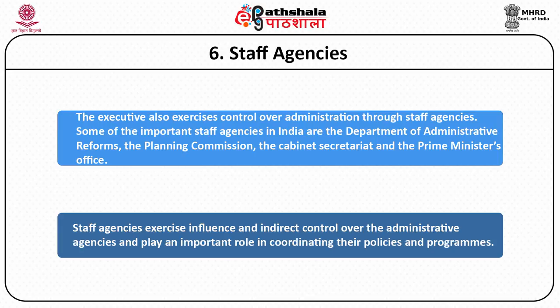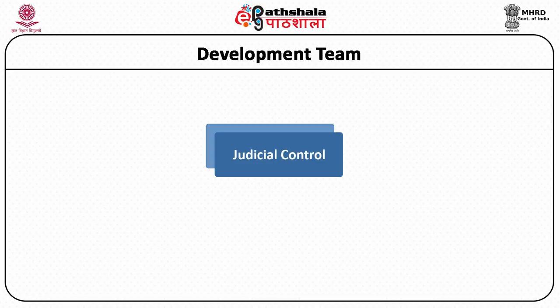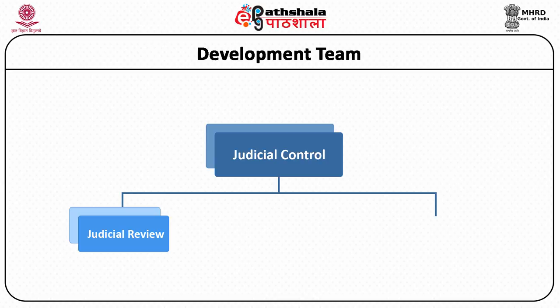Another mode of control over administration is through the judiciary — specifically the higher judiciary, that is, the High Courts and the Supreme Court. This control can be exercised through two modes: through the power of judicial review, which is inherent in the constitution, and through extraordinary remedies available in the form of writs. Judicial control over administration emanates from the concept of rule of law. According to Dicey, the rule of law signifies three interrelated concepts.